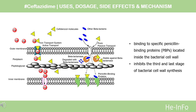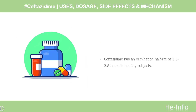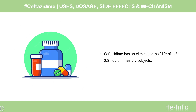Similarly, ceftazidime showed binding to Staphylococcus aureus PBP-1, PBP-2, and PBP-3, with a much lower affinity for PBP-4. Recent data for Mycobacterium abscessus suggest that ceftazidime can inhibit PBP-A1, PBP-A2, and PBP-A at intermediate concentrations. Ceftazidime has an elimination half-life of 1.5 to 2.8 hours in healthy subjects.